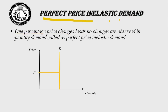Perfect price inelastic demand: A 1% price change leads to no change observed in quantity demanded — this is called perfect price inelastic demand. In this case, the demand curve is vertical. When prices increase by 1%, there is no impact on demand. This vertical demand curve is also called a steeper demand curve.